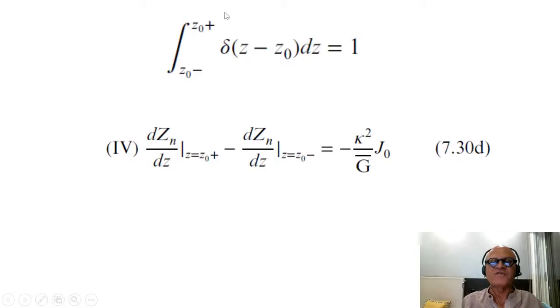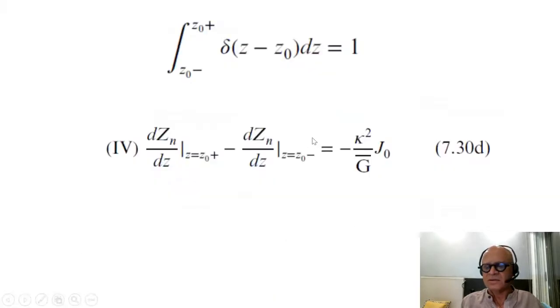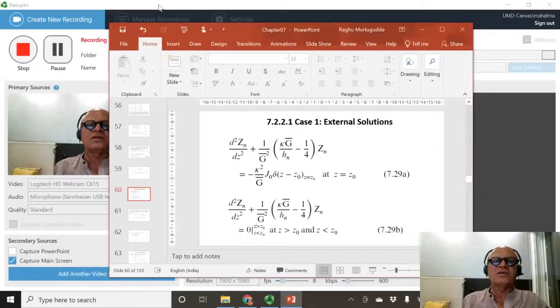That's the forcing function, direct delta function. Obviously when you integrate from the minus z0 minus to z0 plus, it integrates to 1, that's the definition. So that gives you these conditions at either side of the forcing. So look at the solutions, specific solutions in the next podcast.